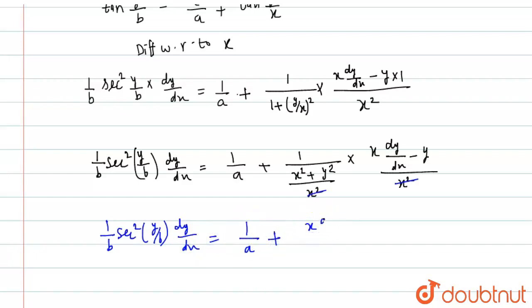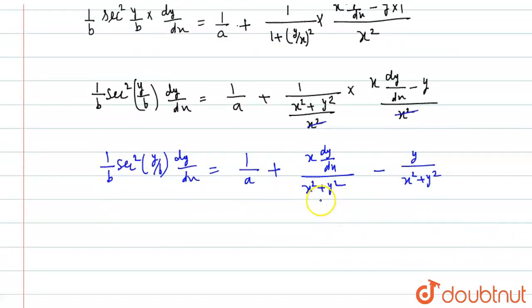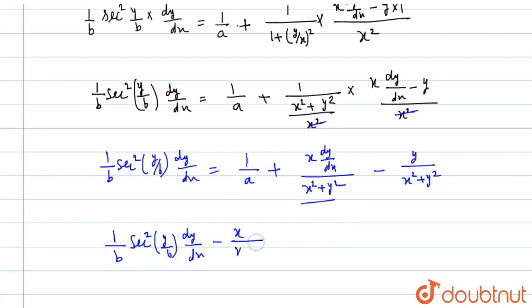This equals (1/b)·sec²(y/b)·dy/dx = 1/a + x·dy/dx/(x² + y²) − y/(x² + y²). Now this term moves to the left side: (1/b)·sec²(y/b)·dy/dx − x/(x² + y²)·dy/dx = 1/a − y/(x² + y²).